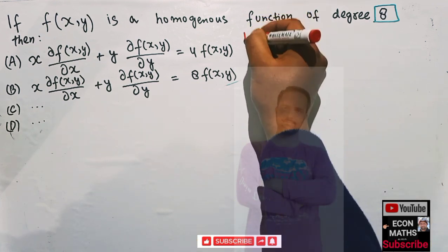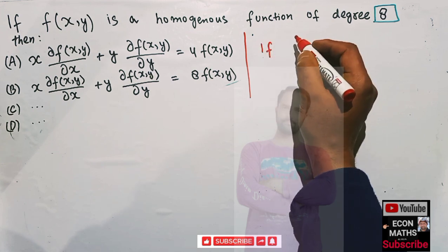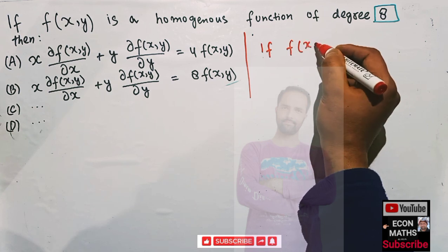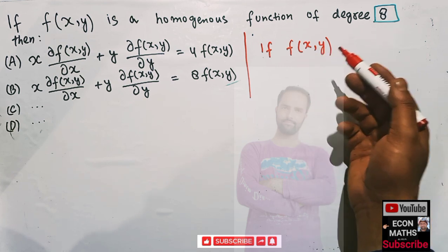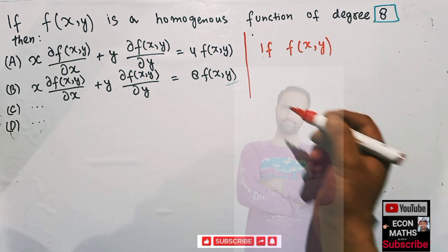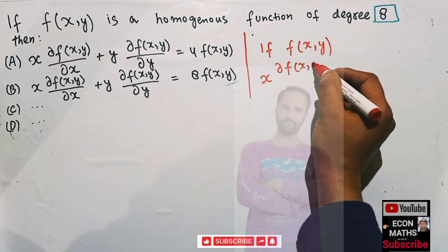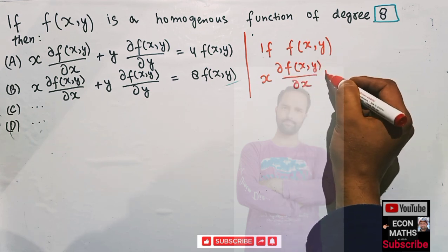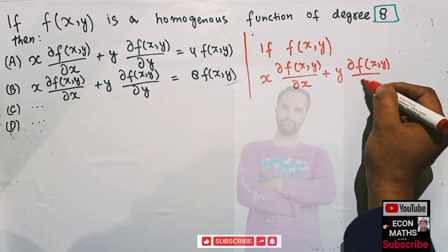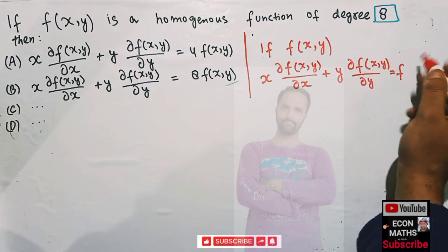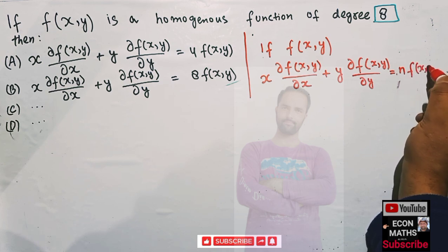We can directly use Euler's theorem here. Euler's theorem tells us: if f(x,y) is a homogeneous function of degree n, then x times the partial derivative of this function with respect to x, plus y times the partial derivative of this function with respect to y, is equal to n times f(x,y).